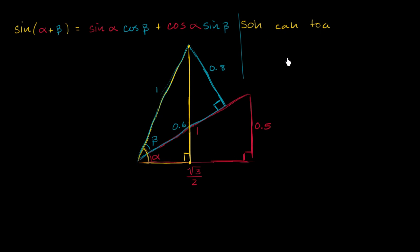Sine of alpha. Sine of alpha is equal to, this is alpha. Sine is opposite over hypotenuse. So it's 0.5 over 1. So this is equal to 0.5.